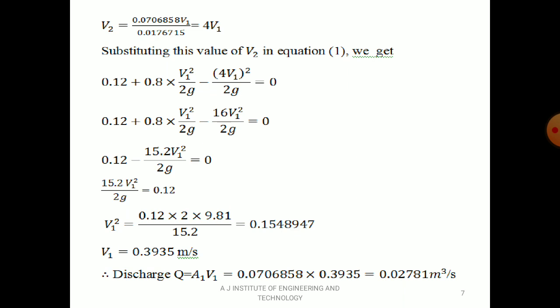Discharge Q = A₁V₁ = 0.0706858 × 0.3935 = 0.02781 m³/s. In this problem CD value was not given, so we used Bernoulli's equation and continuity equation to find velocity, then calculated discharge.